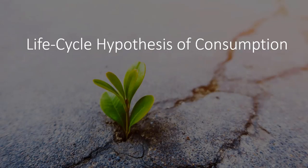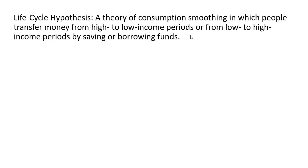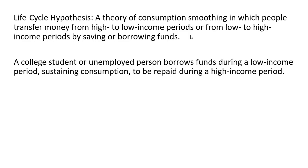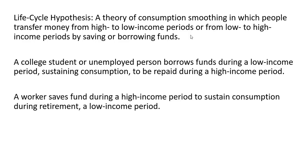We're going to look at the Life Cycle Hypothesis of Consumption. This is a theory of consumption smoothing in which people transfer money from high to low income periods, or from low to high income periods, by saving or borrowing funds. A college student or unemployed person borrows funds during a low income period, sustaining consumption, to be paid during a high income period. A worker saves funds during a high income period to sustain consumption during retirement, a low income period.